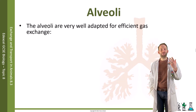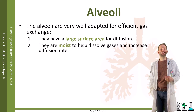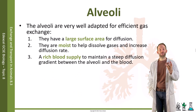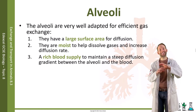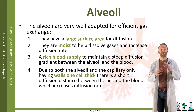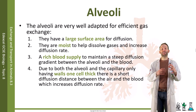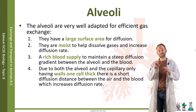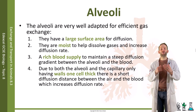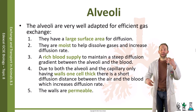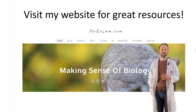The alveoli are very well adapted for efficient gaseous exchange. They have a large surface area for diffusion. They are moist, which helps dissolve gases and increase diffusion rate. They've also got a rich blood supply to maintain a steep diffusion gradient between the alveoli and the blood. Due to both the alveoli and the capillary only having walls one cell thick, there is a short diffusion distance between the air and the blood, which increases the diffusion rate. The walls are also permeable, so they're highly adapted for efficient gas exchange.